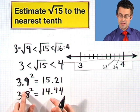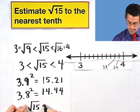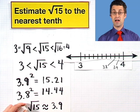And you'll notice that's a lot further away from 15 than 15.21 is to 15. So, in fact, this is a better estimate, and my answer is that the square root of 15 is approximately equal to 3.9. And so there's my answer.